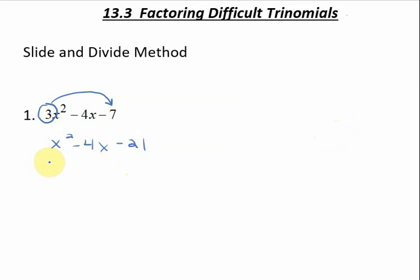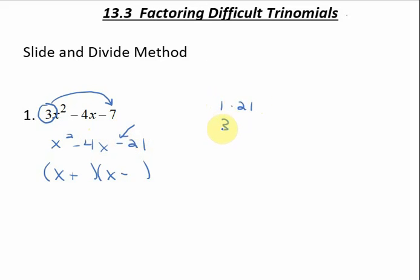We'll factor it just like we would an easy trinomial. A trinomial factors into two binomials, basically going backwards from foiling. The first two terms have to multiply to give us x squared, so that's x and x. Then we look at the second sign — since it's negative, the signs in our two binomials are different, so one positive and one negative. We look at 21 and find factors that subtract to give us 4. The factors of 21 are 1 and 21, and 3 and 7. Since 3 and 7 subtract to give 4, and the first sign is negative, the 7 is negative and 3 is positive.